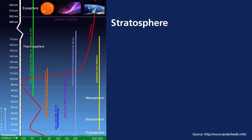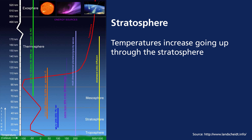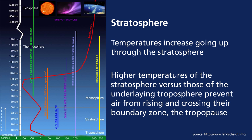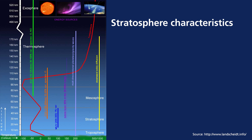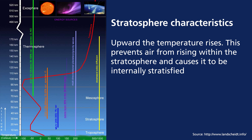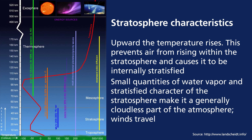The stratosphere is above the troposphere. Here temperatures increase as you go up through the stratosphere. The higher temperature of the stratosphere versus the underlying troposphere comes from the crossing of the tropopause boundary. The top of the stratosphere is marked by a temperature decrease at a boundary called the stratopause, at an altitude of approximately 50 km from Earth's surface. The upward temperature increase through the stratosphere prevents air from rising within it, causing it to be internally stratified with its own layers. The stratosphere has small quantities of water vapor, is generally cloudless, and winds are parallel to Earth's surface — it is observable as a clear area above the clouds in the troposphere.